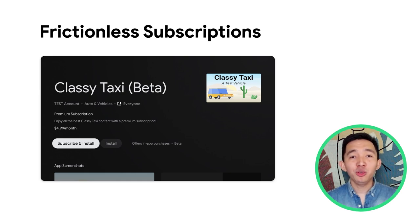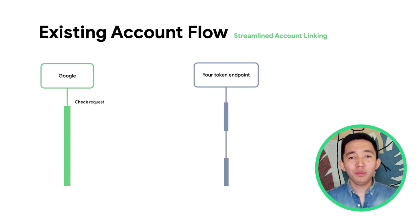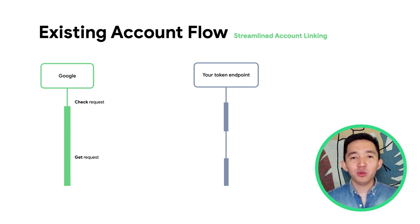To learn more about frictionless subscriptions, we have another video you can check out that goes into more detail. Streamline extends the same token endpoint from your OAuth integration with three new intents: check, create, and get. Let's take a look at how these work.